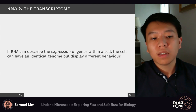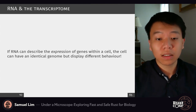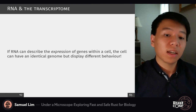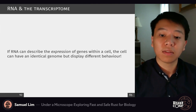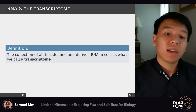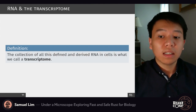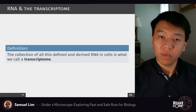If RNA can describe the expressions of genes within a cell, the cell can have an identical genetic sequence — an identical genome — but as it's changing, producing different proteins, going to different factories, and communicating differently, it can display different behavior even with the same genetics. The collection of all this dynamic, transcribed RNA in cells is collectively what we call a transcriptome.